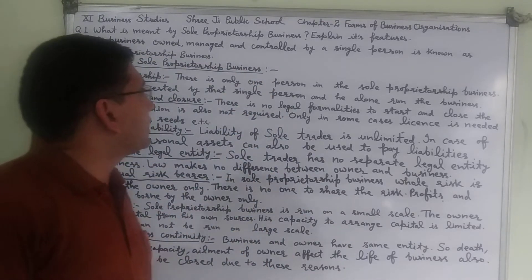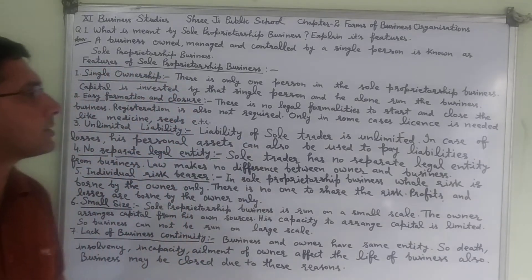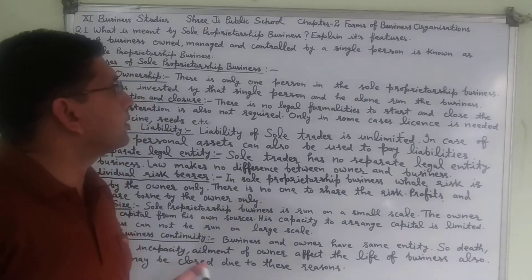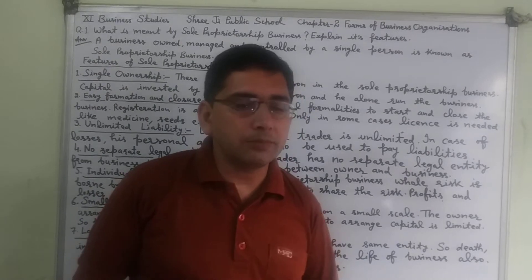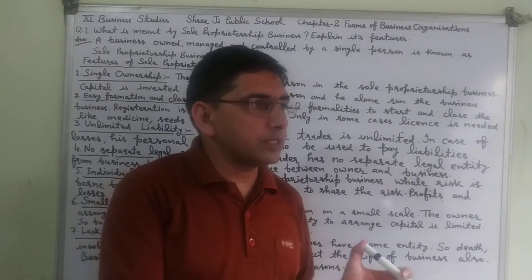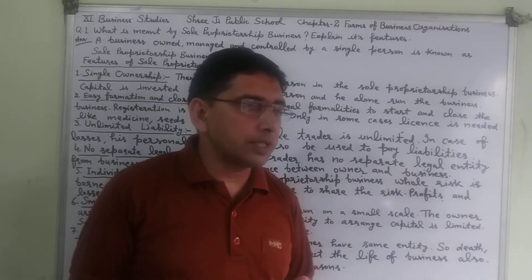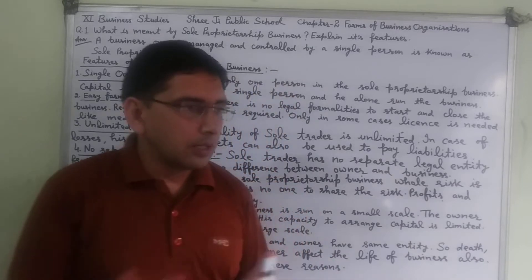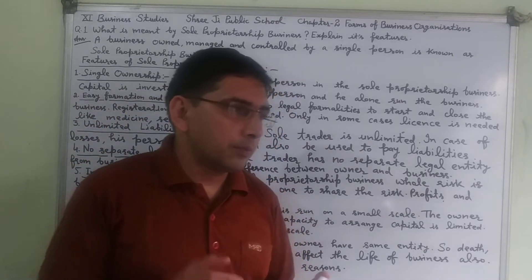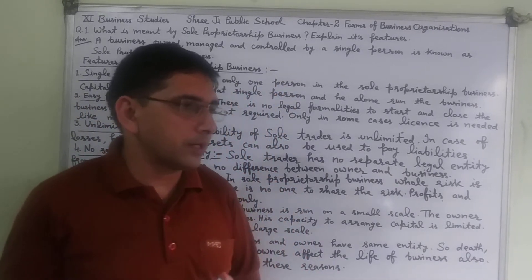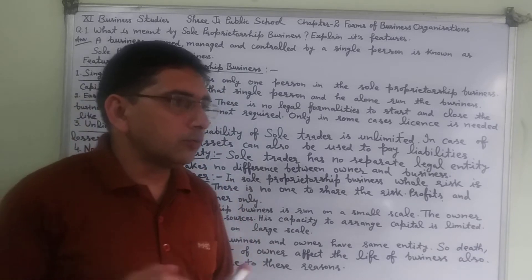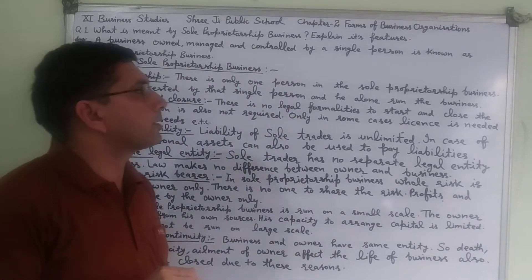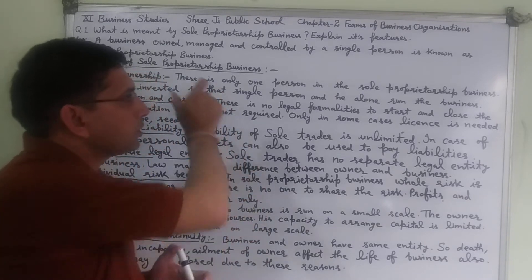A business owned, managed, and controlled by a single person is known as sole proprietorship business. This means that one person runs, controls, and manages the business, and that single person alone enjoys the profits and suffers the losses of the business.